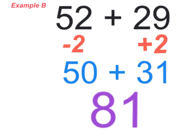Now, here's a second example here. Just for clarification, in this example, I took 2 away from the first term and added 2 to the second term to give us 50 plus 31, which is 81. I could have just as easily added 1 to the second term and subtracted 1 from the first.